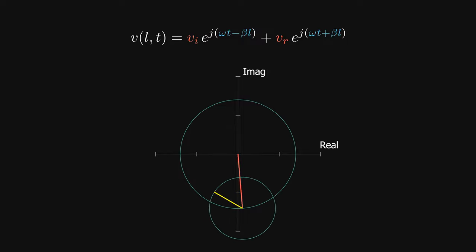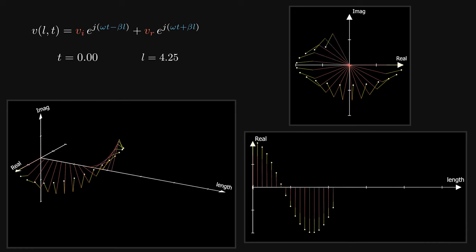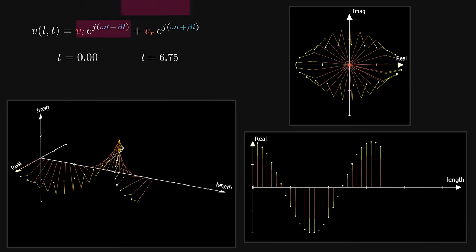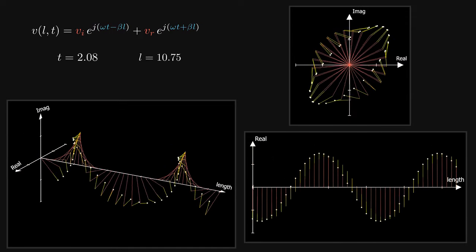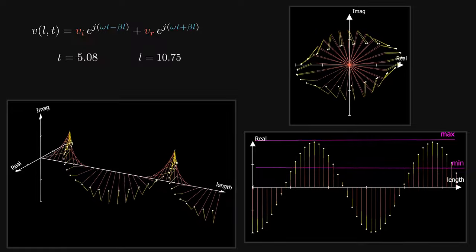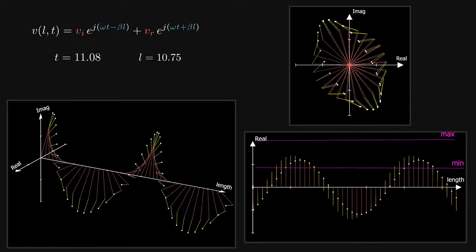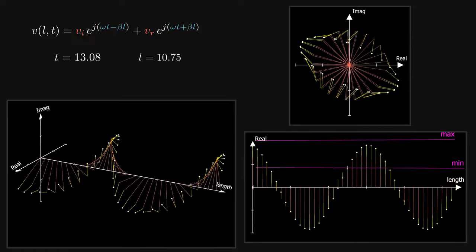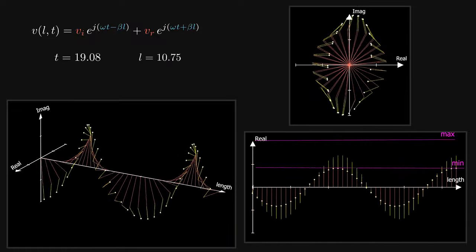Addition of two vectors in a complex plane is just adding the tail of the second vector on top of the head of the first. So at t equals zero, the whole voltage wave at each point on the line is the addition of the two vectors associated with the incident and reflected waves. As time goes on, the vectors rotate and the resultant amplitude swings between maximum and minimum values. This maxima and minima occurs due to constructive and destructive interference between forward and backward waves, becoming more significant as the reflected wave gets bigger.